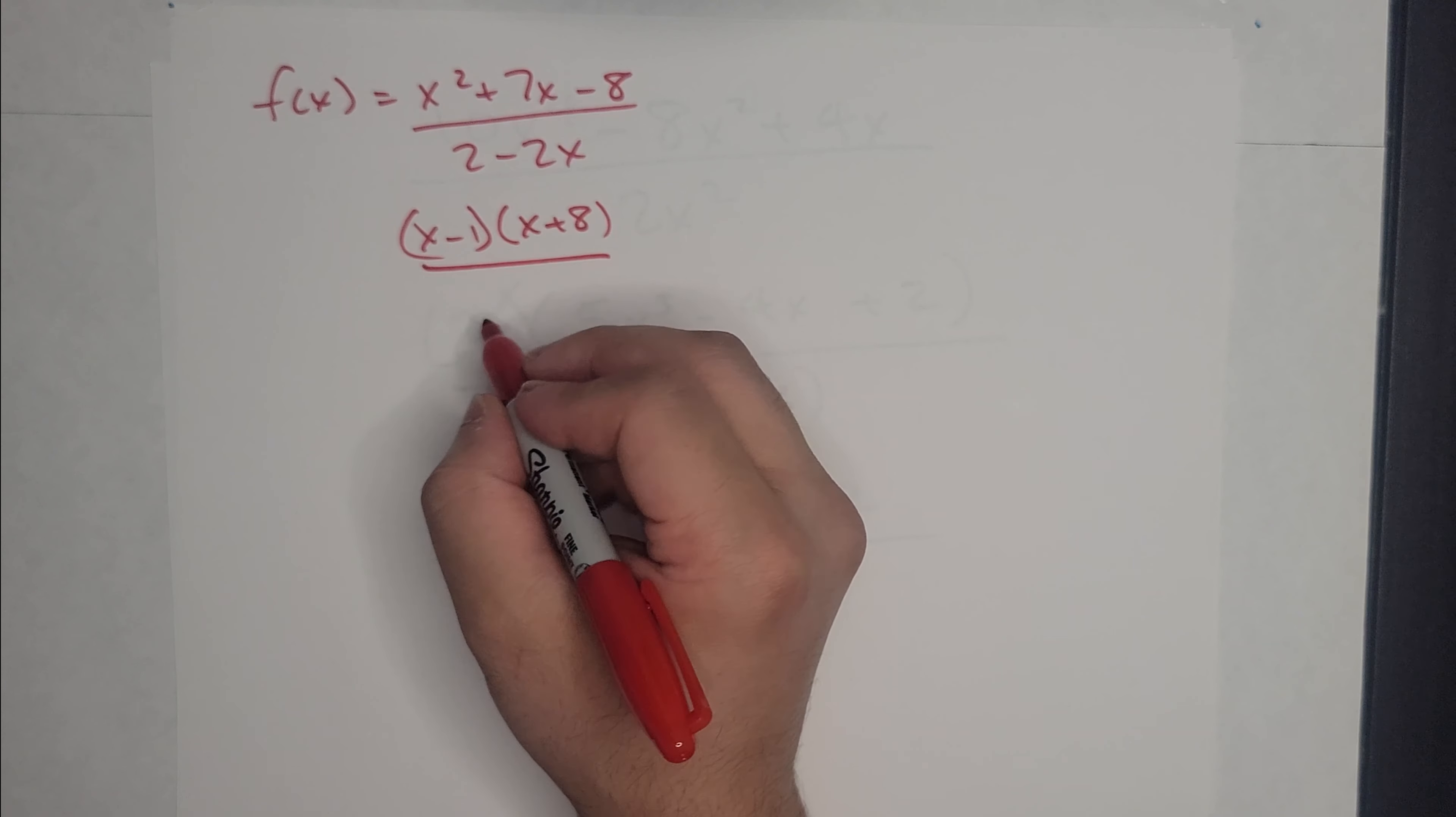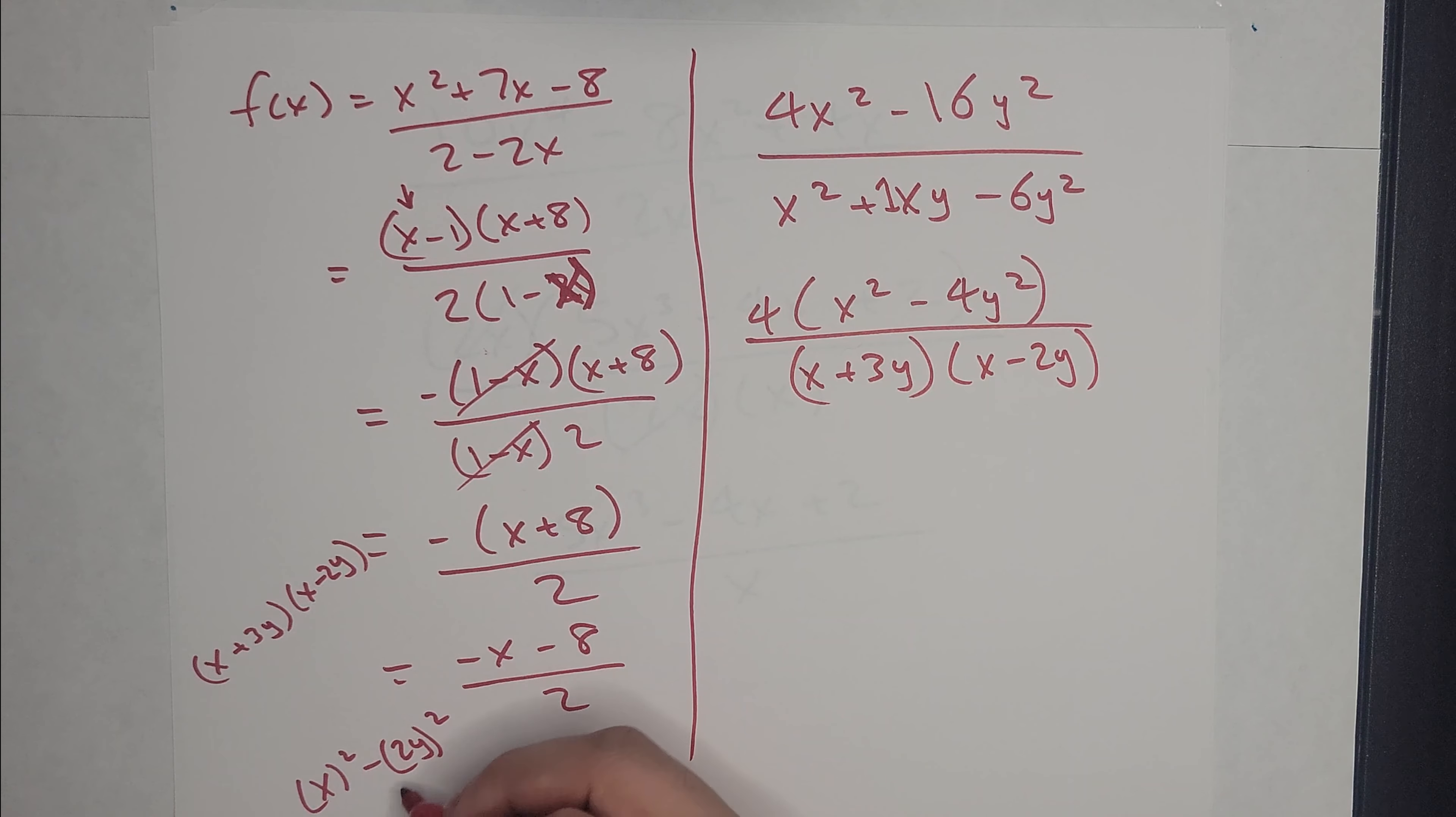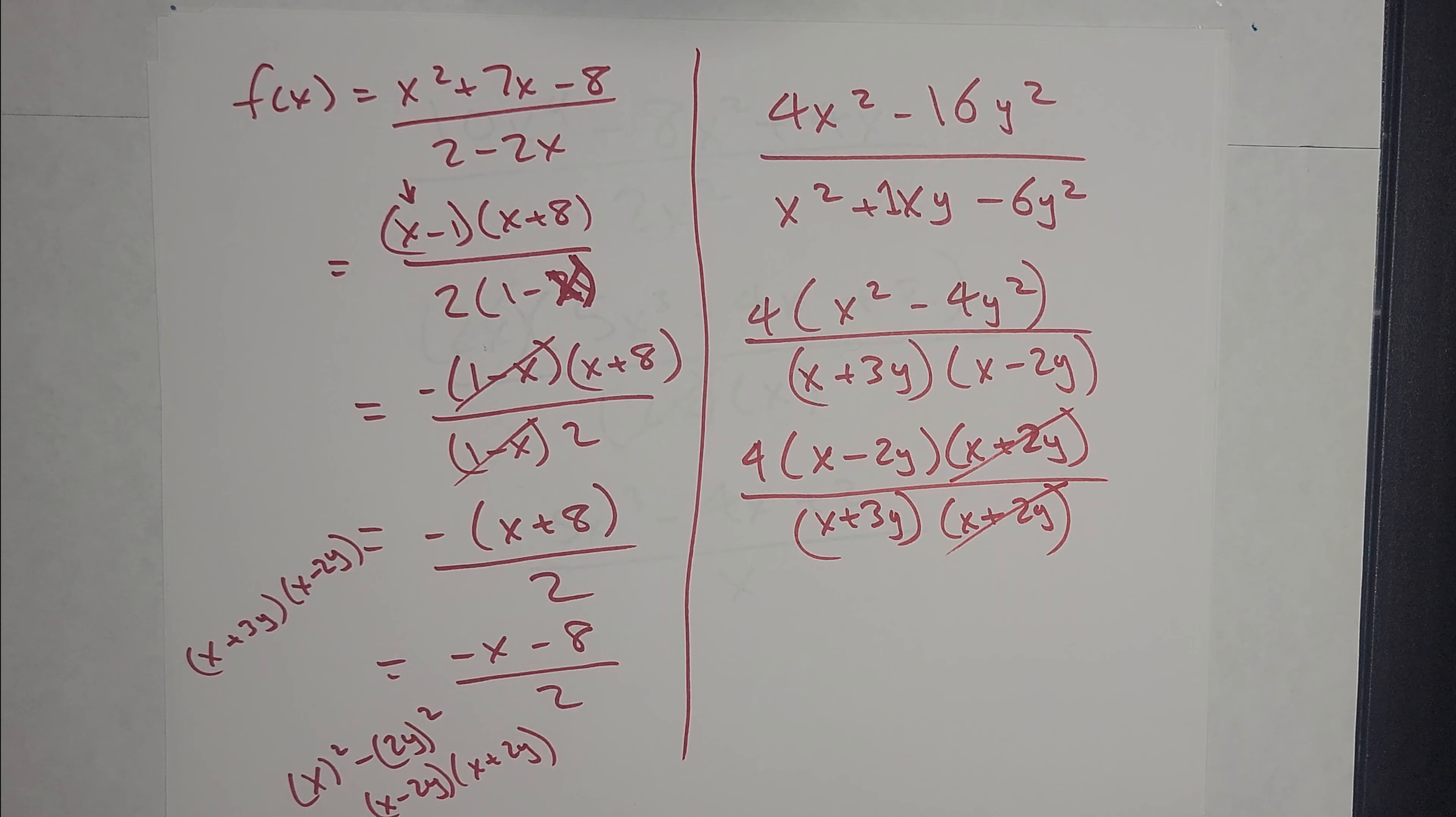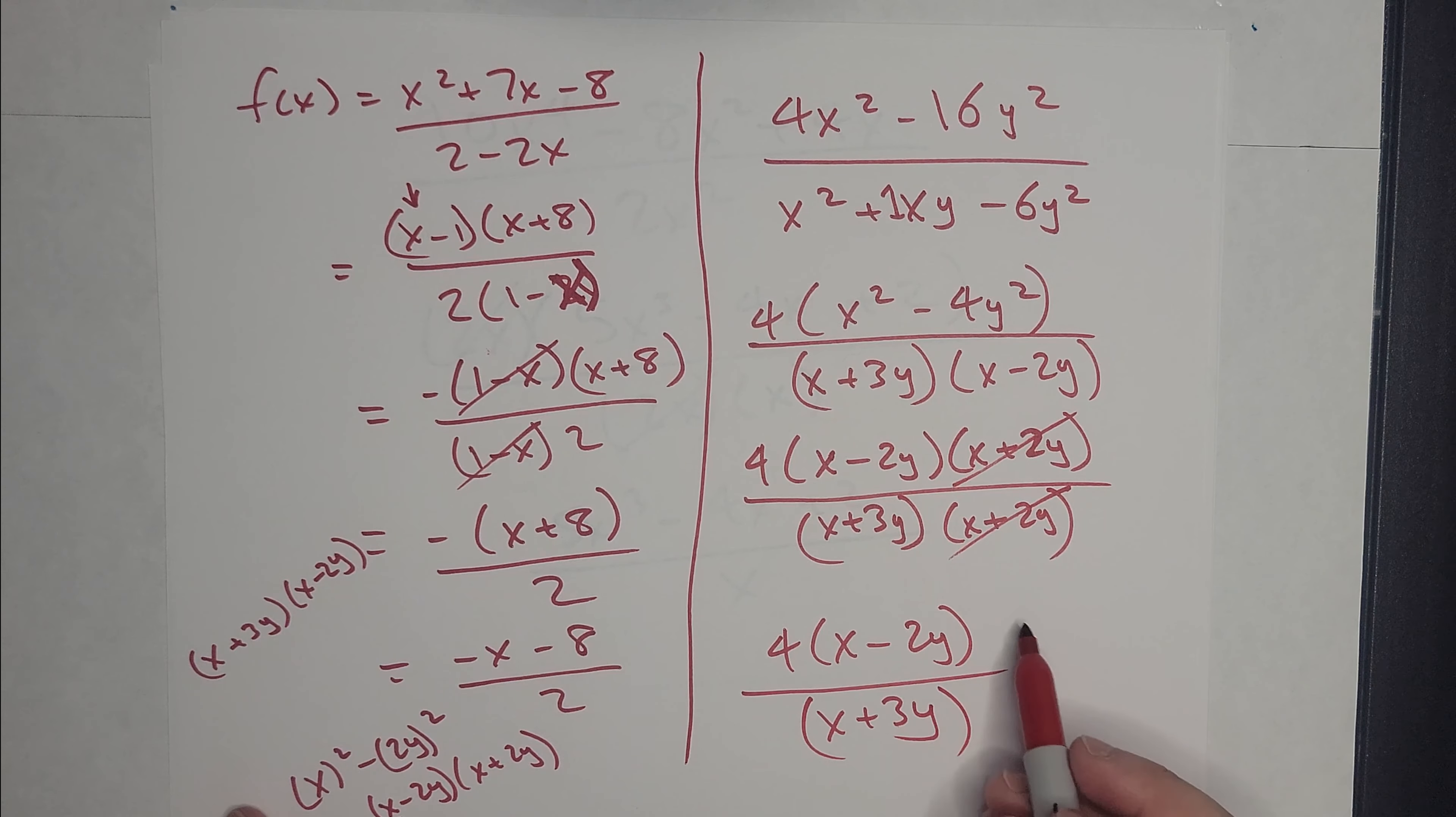So that should give me (x - 2y)(x + 3y). And this I can rewrite as the difference of squares formula. It should give me (2x - 4y)(2x + 4y). And that will put me here in the numerator and denominator. And now I can write it out as 4 times (x - 2y) over (x + 3y). And that's that.